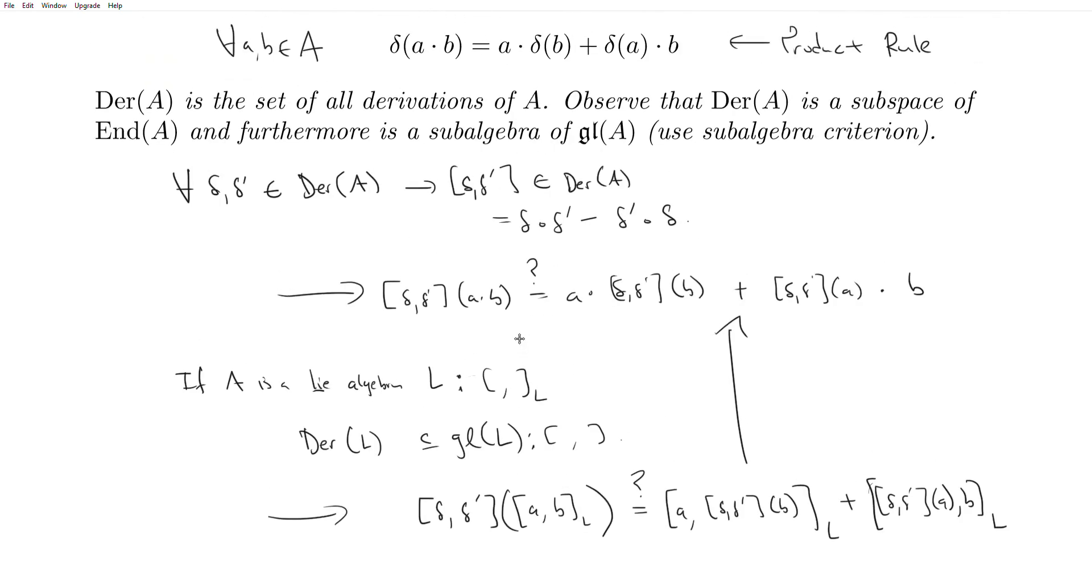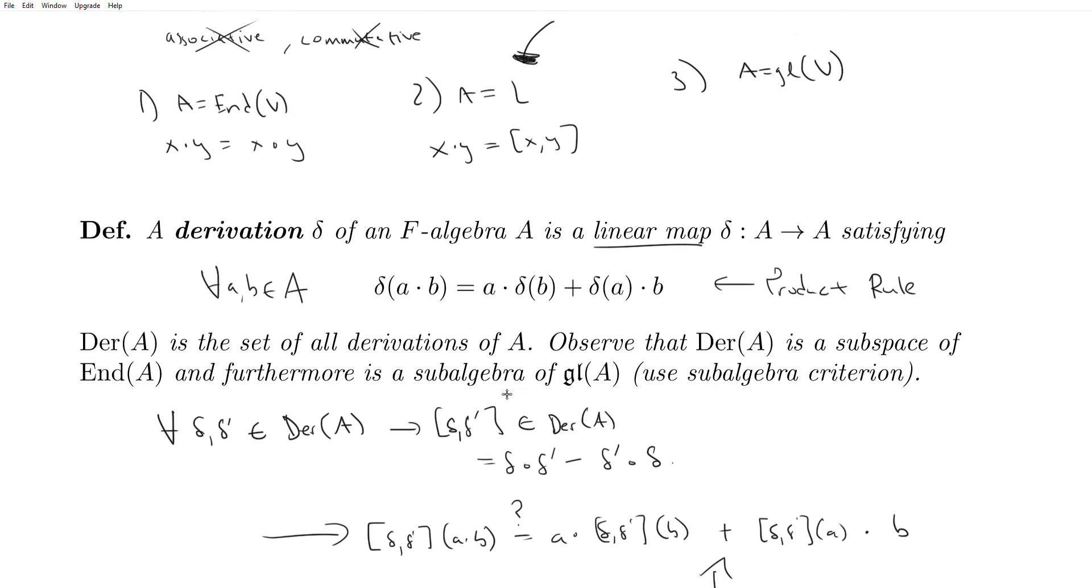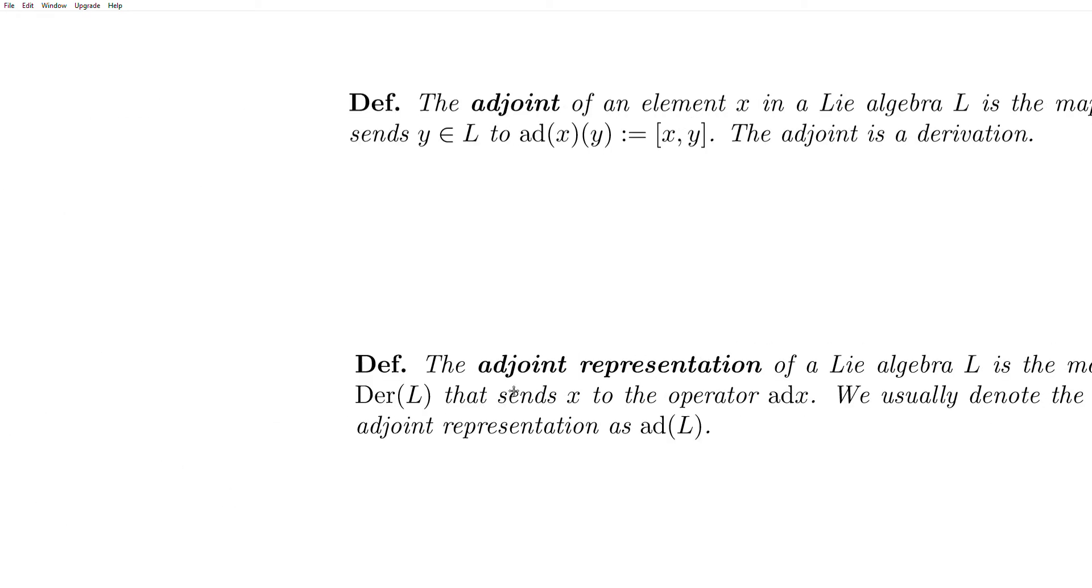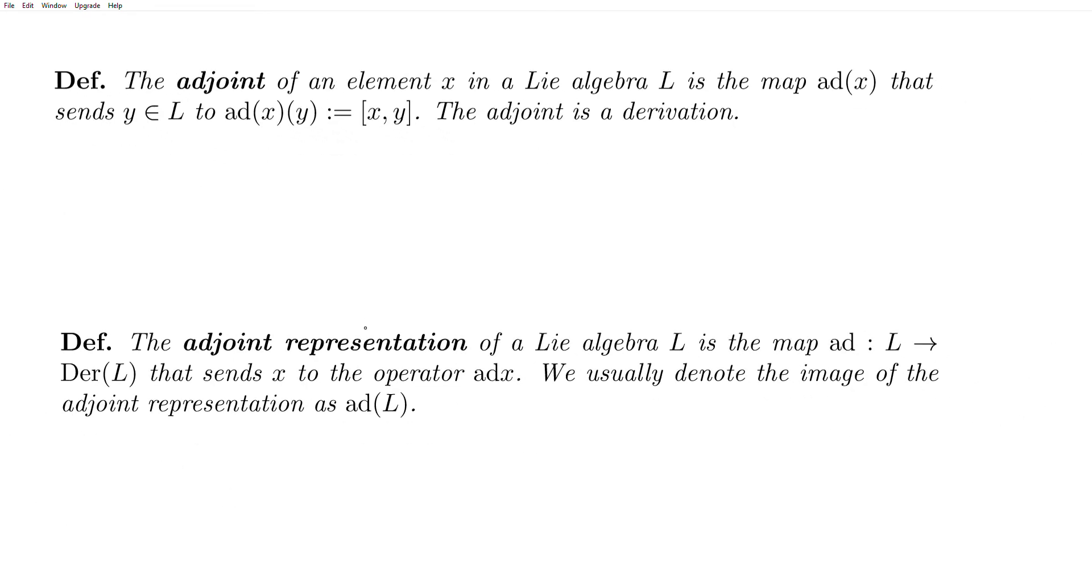And so those are just derivations. And a very important derivation is called the adjoint of an element. And so the adjoint of an element X in the Lie algebra L is the map ad(X) that sends Y, any Y in L, to X bracket Y. And so the way we can think of this really is you have ad(X), and then it accepts an argument. And the thing you stuff in as the argument is simply the thing you stuff in here. So it sends Y to X bracket Y.